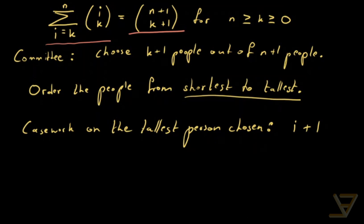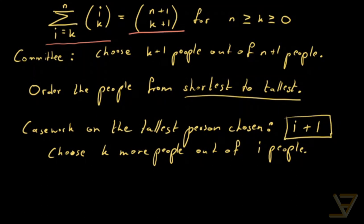Then what happens is that you have to choose k more people out of the shorter i people. Because if the tallest person is the one at index i plus one, then there are i other people who are shorter than that person out of whom we can choose these k people.